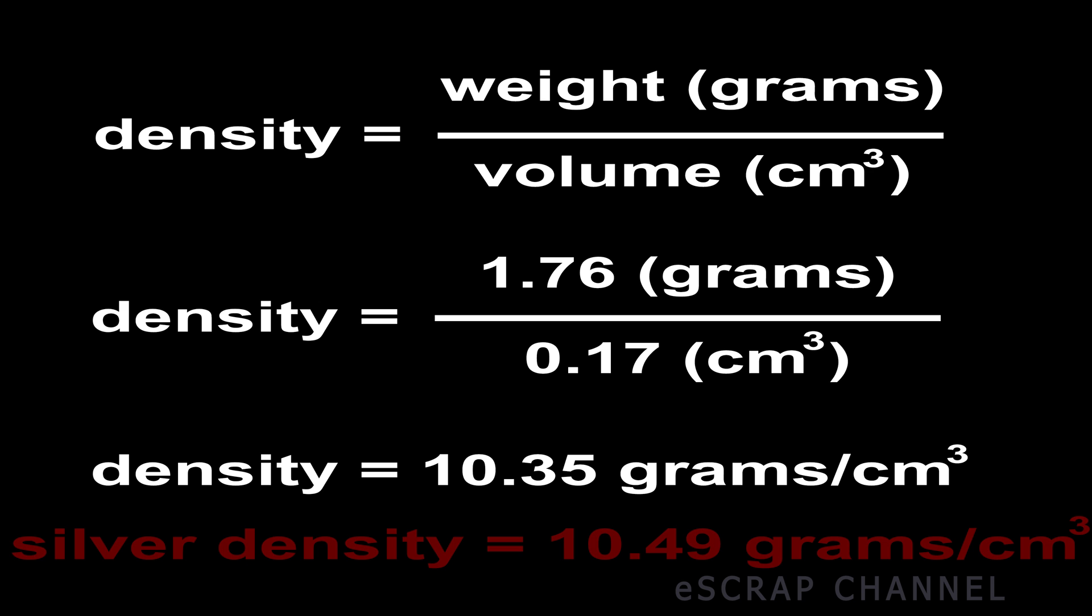Let's do a calculation. Density is defined as the mass per unit volume. In our case the mass is 1.76 grams and the volume of this cup is 0.17 cubic centimeters which is exactly equal to the displacement of the water when we submerged the cap, this small cap. So calculation shows that density of our object is 10.35 grams per cubic centimeter.